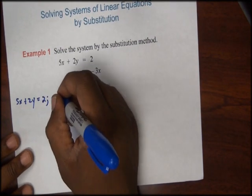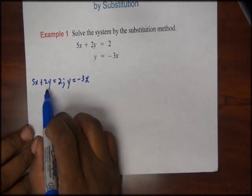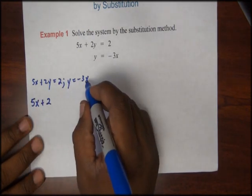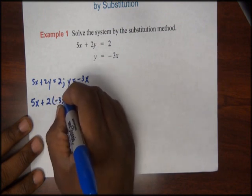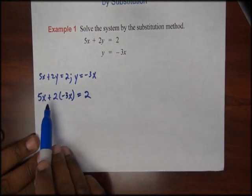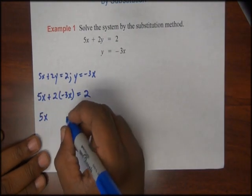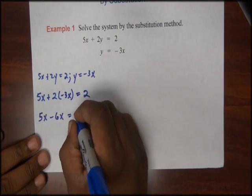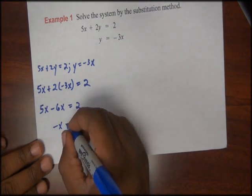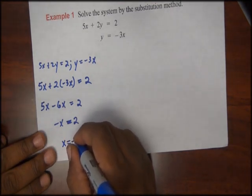We're going to substitute y for negative 3x. So wherever I see a y, I'll substitute negative 3x. We have 5x plus 2 times y, which is negative 3x, is equal to 2. Notice that our equation is now in one variable. I'll simplify: 5x minus 6x is equal to 2. 5x minus 6x is negative x, so negative x equals 2. We'll multiply both sides by a negative, therefore x is equal to negative 2.